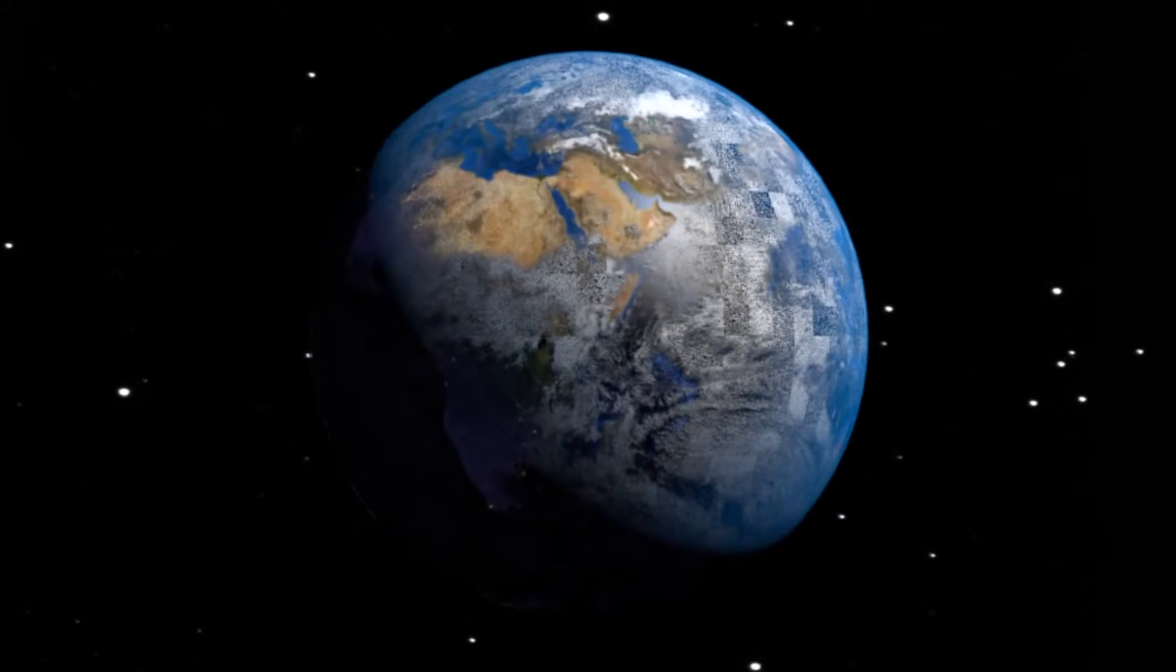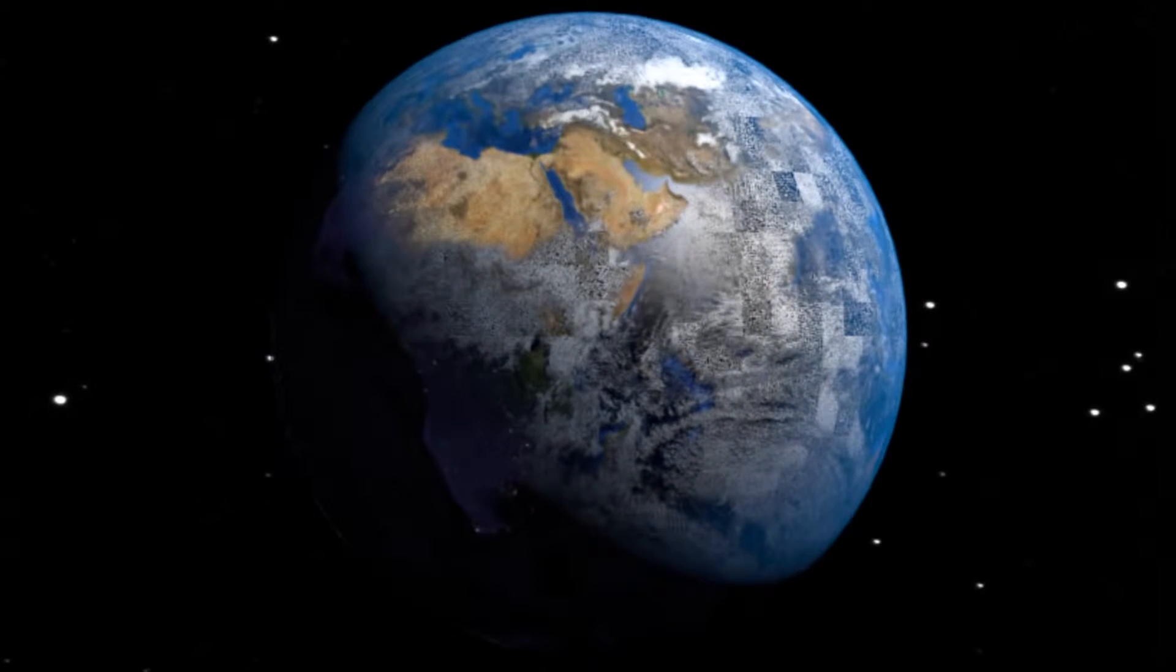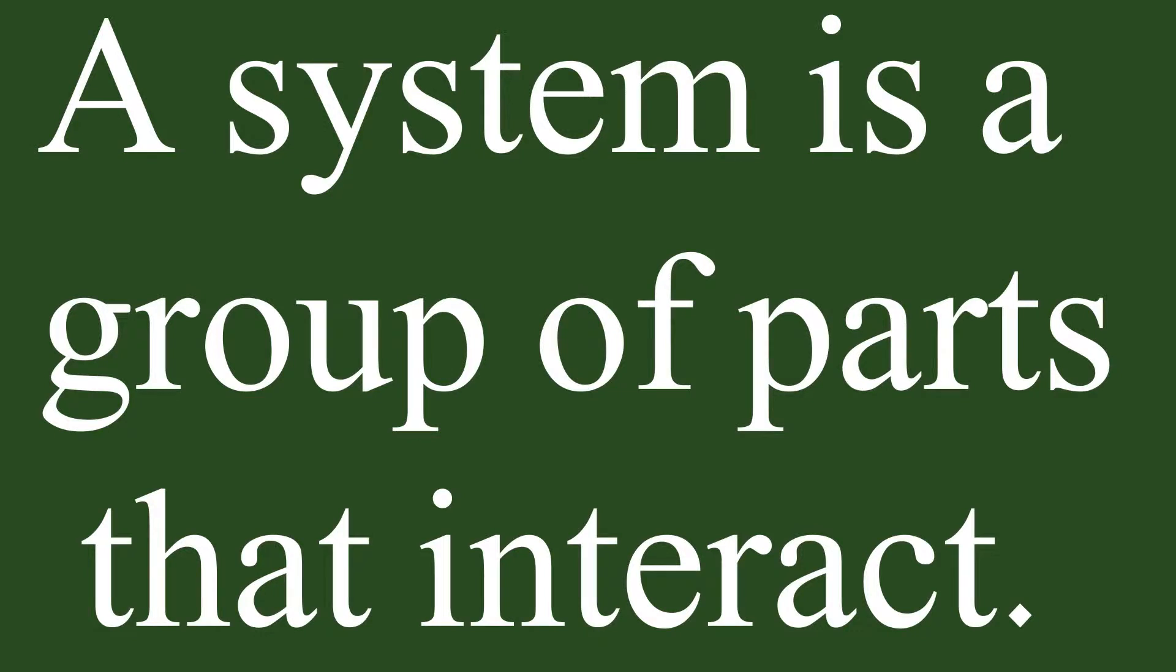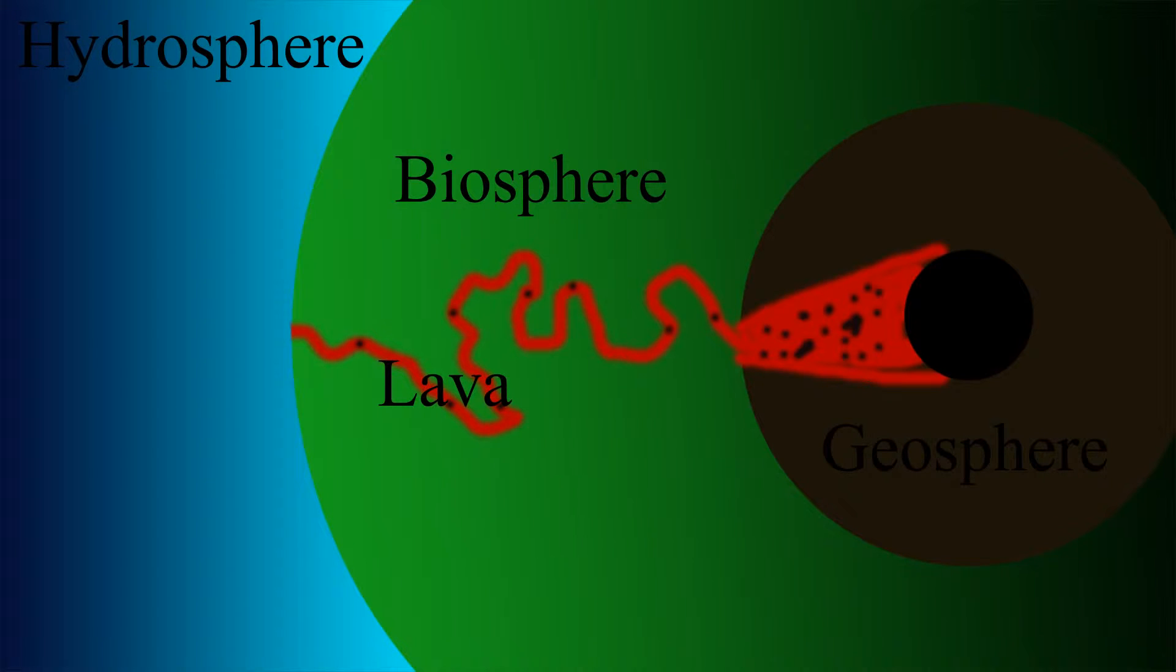Today we are going to be talking about one of the Earth's systems. A system is a group of parts that interact. The system we will be discussing is the volcano's life cycle.